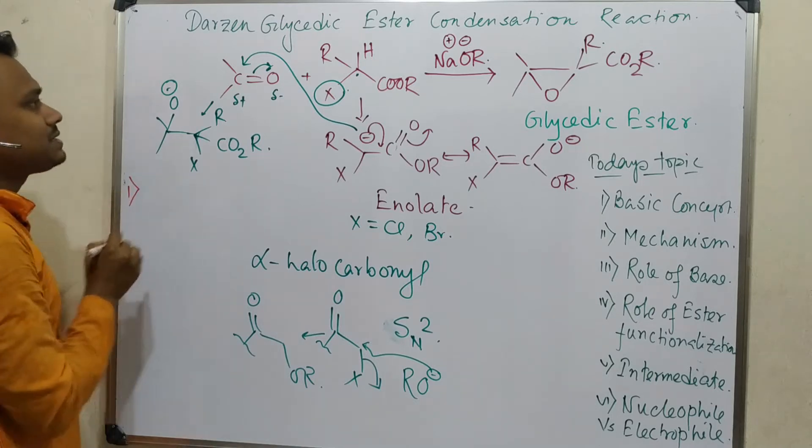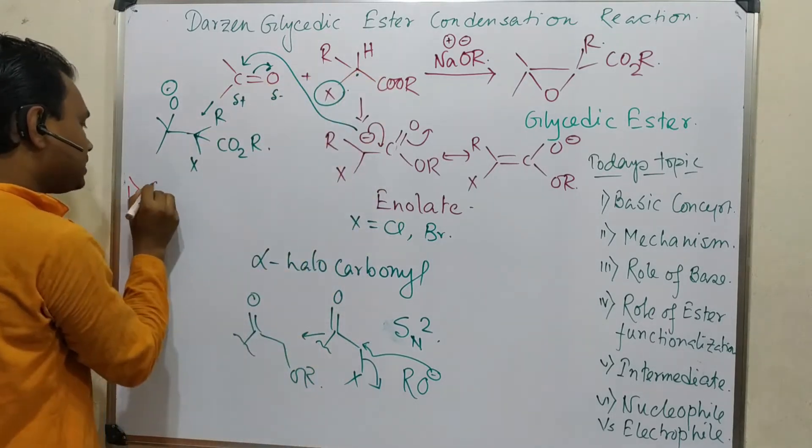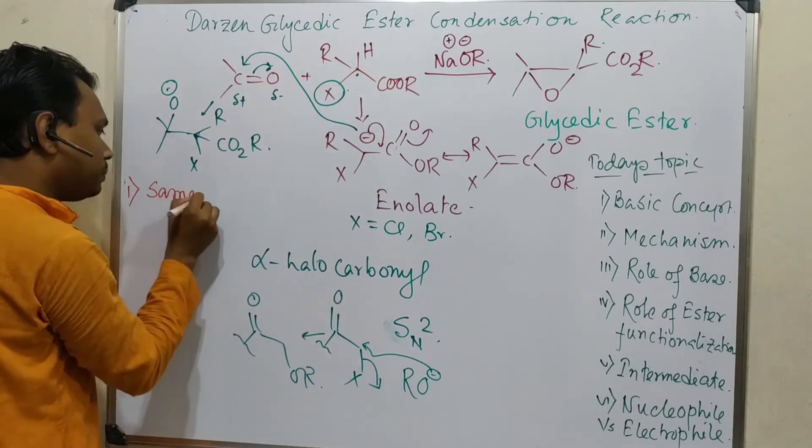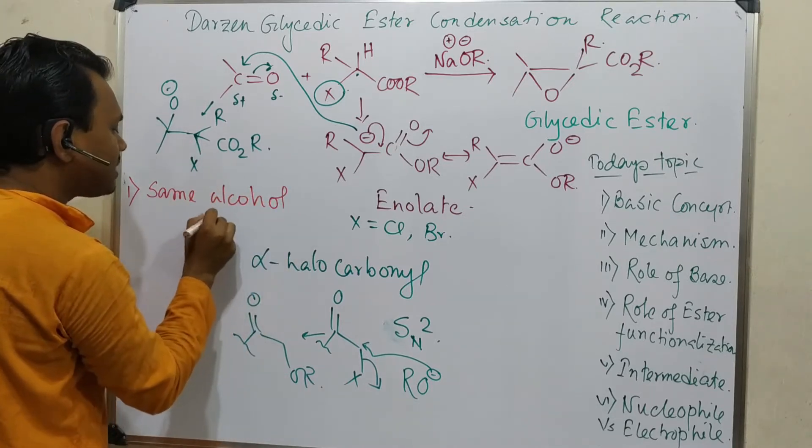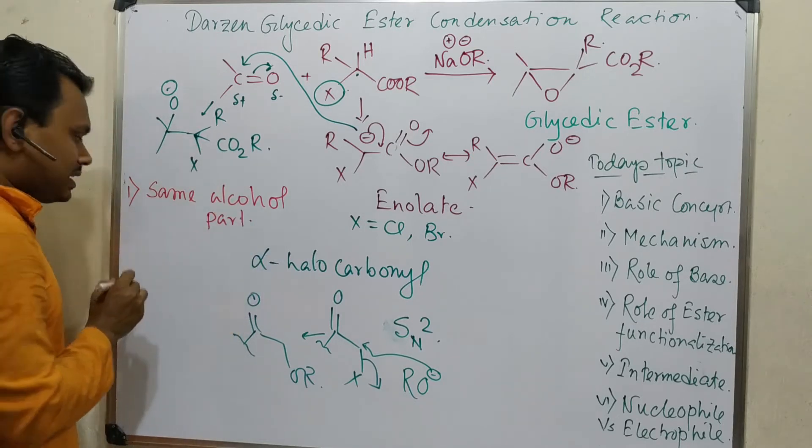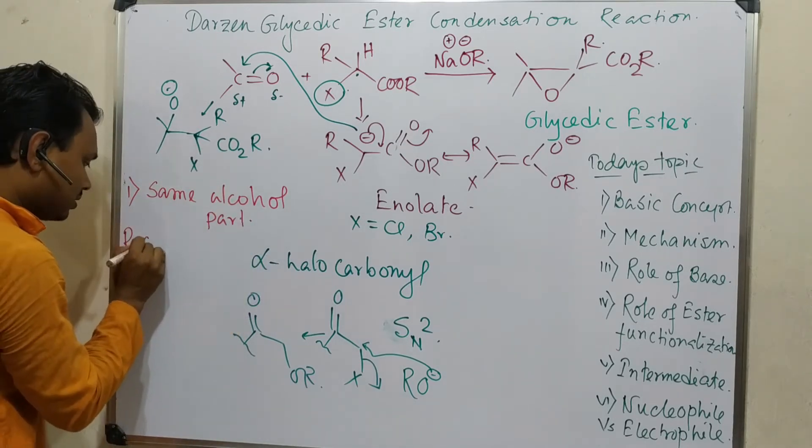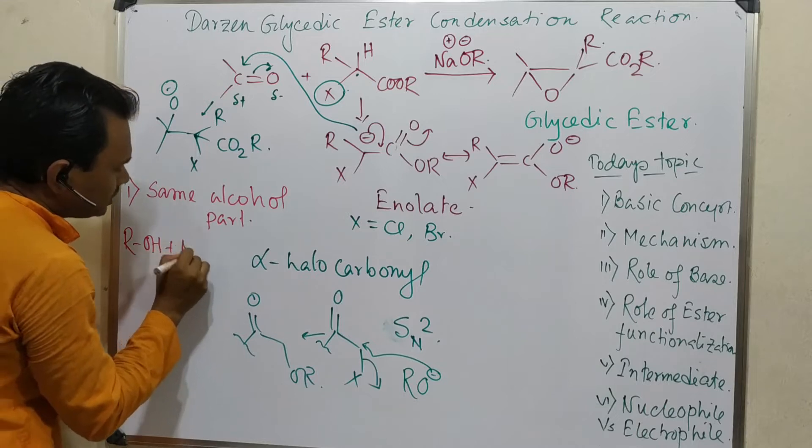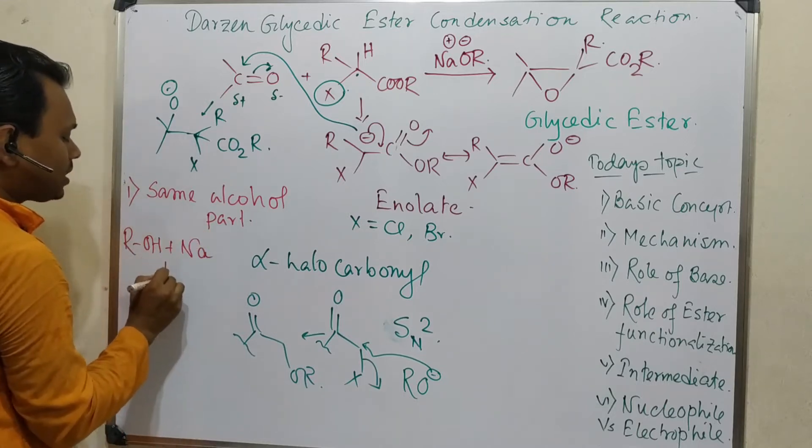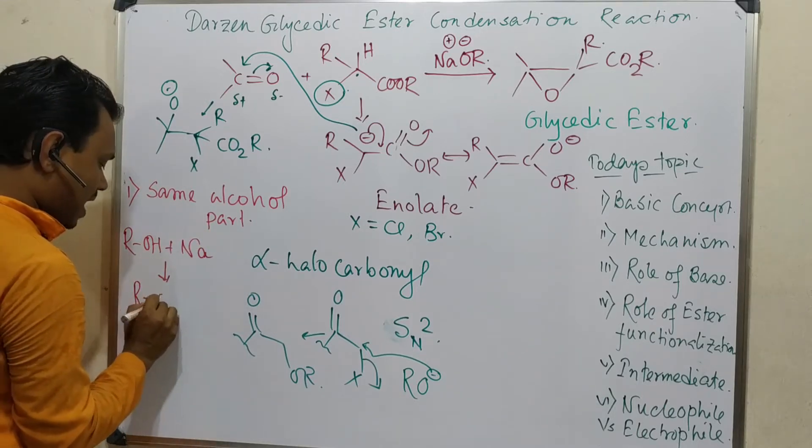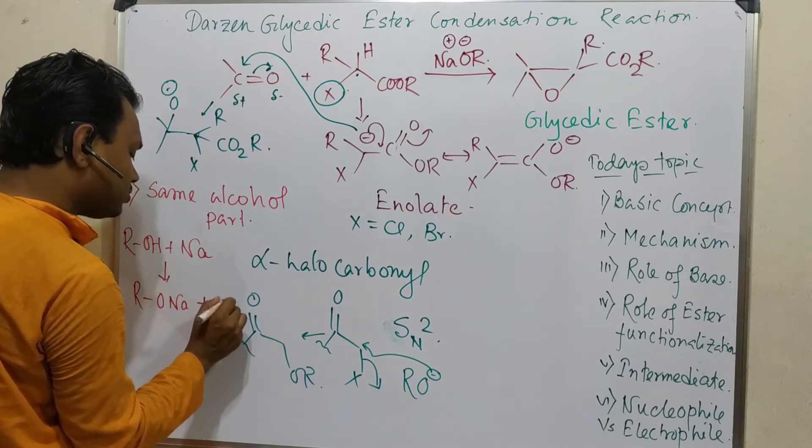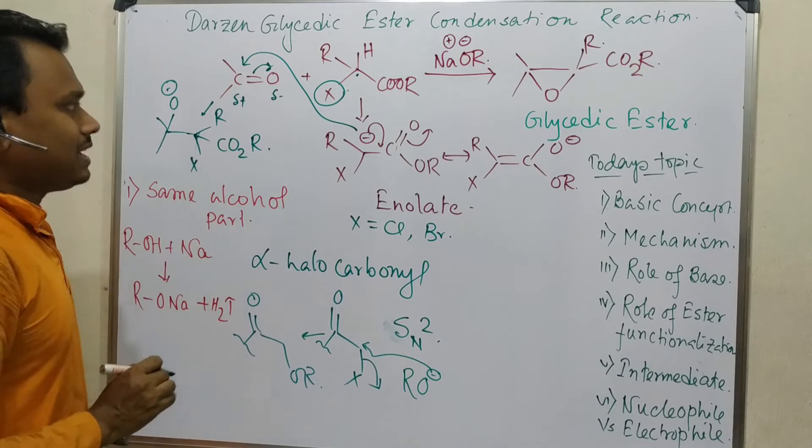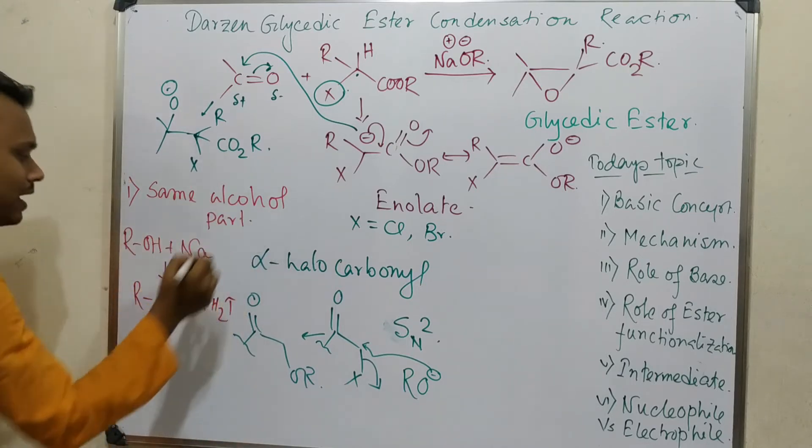Type one is base having the same alcohol part. How can you generate this? You can take the alcohol and you can add sodium - metallic sodium - that will produce sodium alkoxide plus hydrogen gas. It will go out. This is one technique.